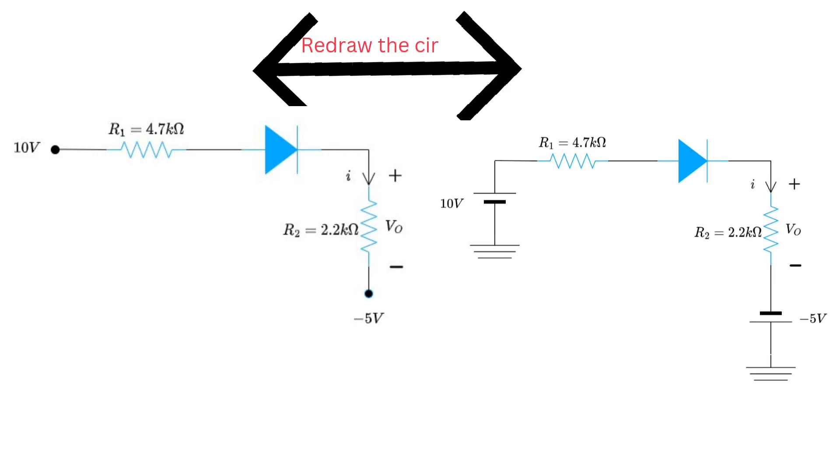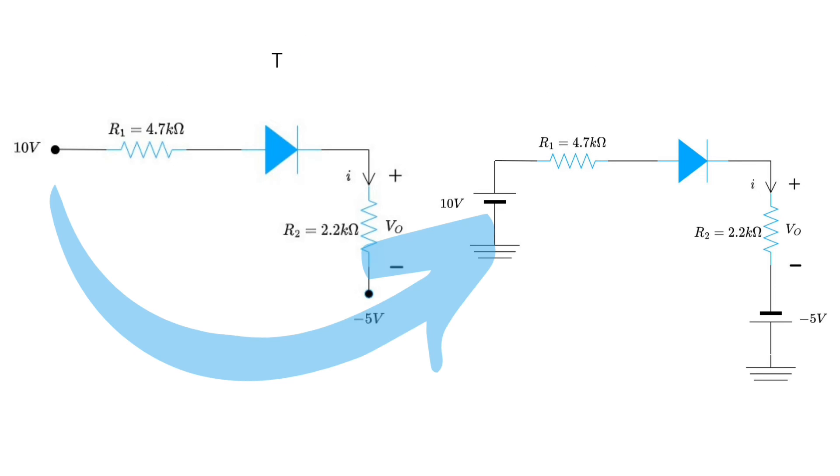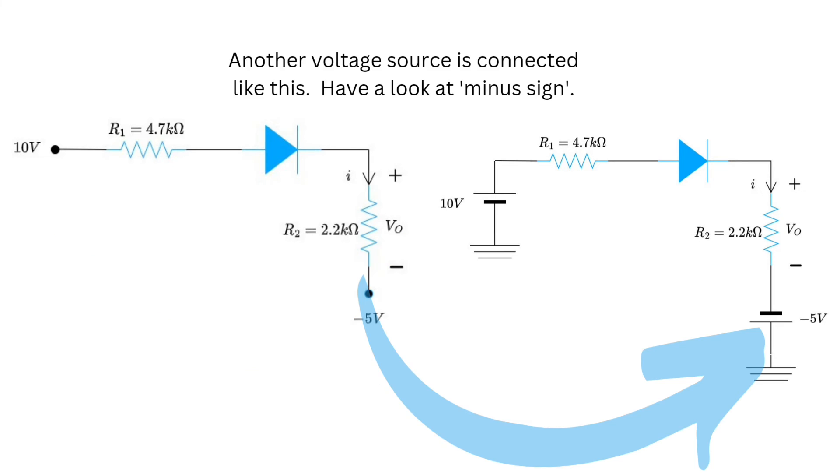Let's start with circuit one. This is circuit one and I redraw the circuit like this. This is same voltage source and this is the another voltage source and I connect the ground like this.